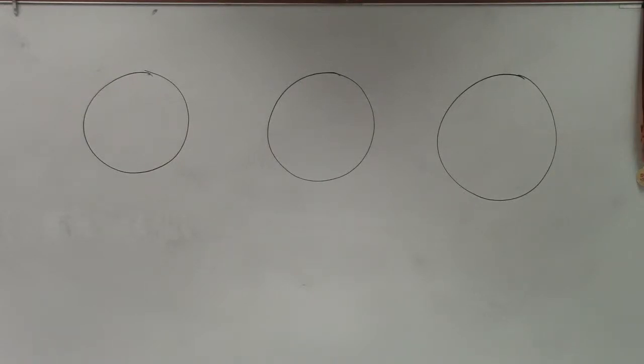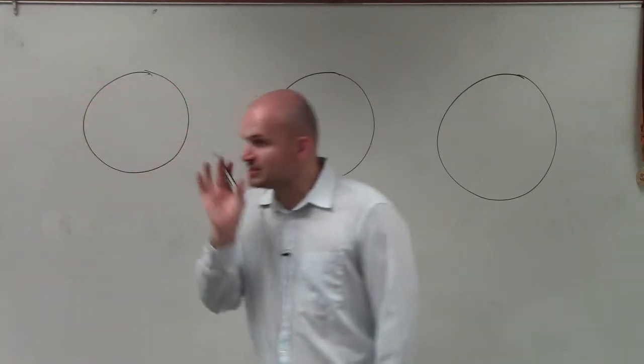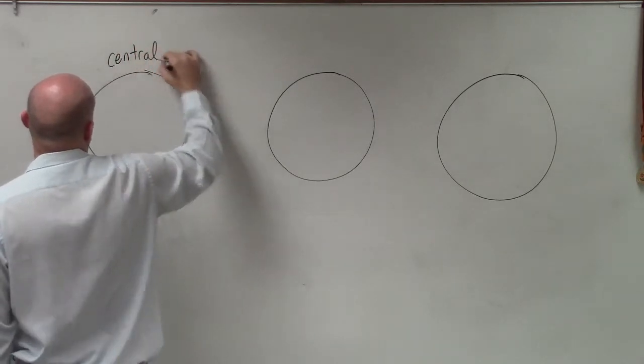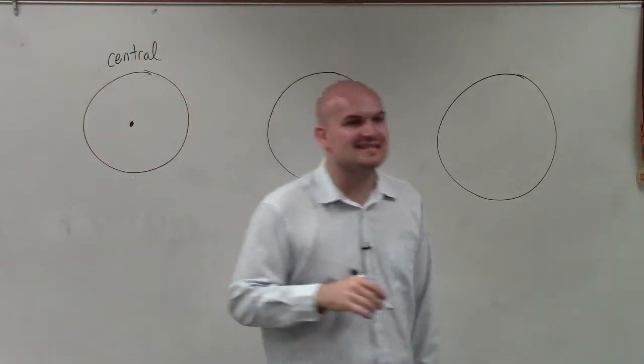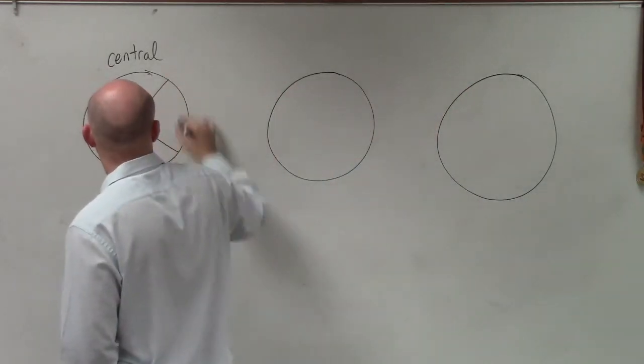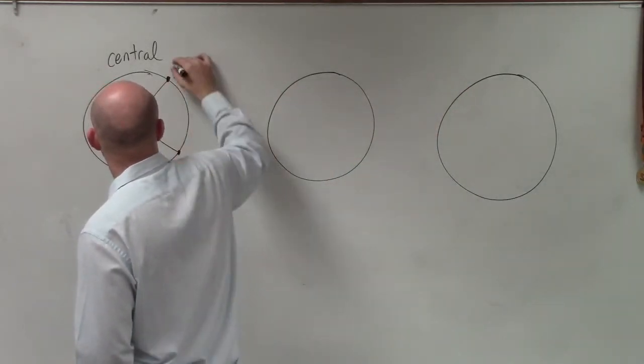All right, so what I'm going to do is a quick little review refresher for you on some of the things that we learned. The first thing we learned was a central angle. Now, the main important thing about a central angle was a central angle had a vertex at the center, all right?